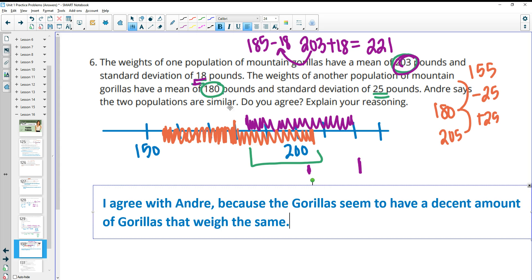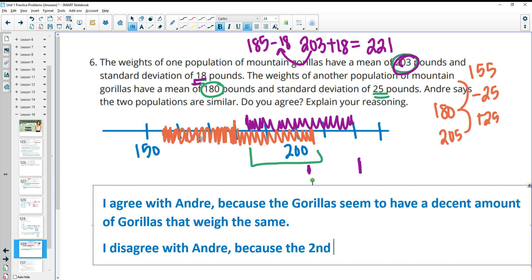I think there's also some merit to saying that the second set of gorillas is lighter. So you've got over half of them, like there's a lot down here that seem to be lighter. So I think you could say I disagree with Andre because the second set of gorillas seems to be lighter or smaller. So there seems to be a lot on the lighter or smaller end. So I think it just kind of depends on how you see the data and how you want to say, do you agree because of the overlap? Do you disagree?